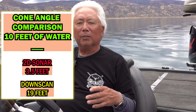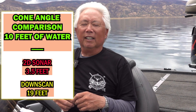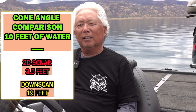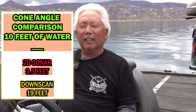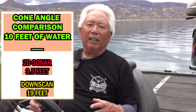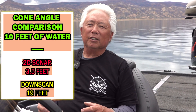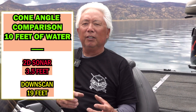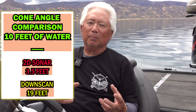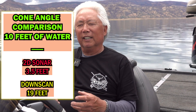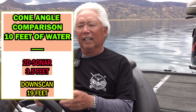So 2D, which is one of the first videos I did — if you're in 10 feet of water, you're only looking at about a three and a half foot cone angle. And with down imaging, in 10 feet of water you're looking at 19 feet. So there's a lot of difference in coverage. In 2D, if I ran over a tree, you would see a blob. In downscan, you would actually see a picture of the tree.